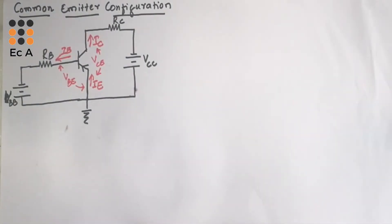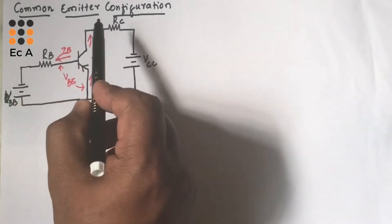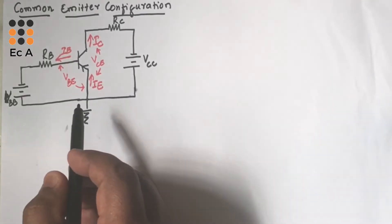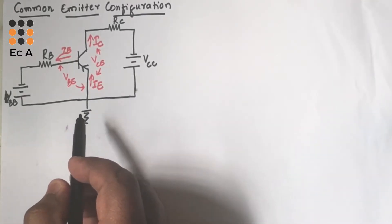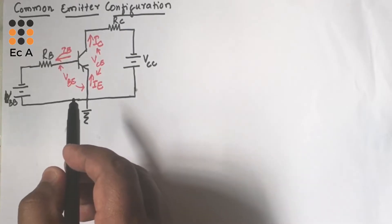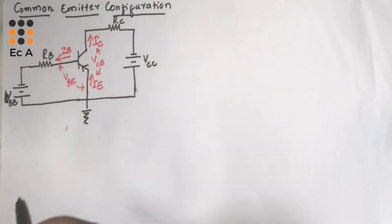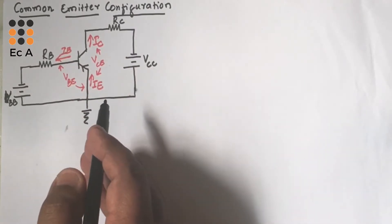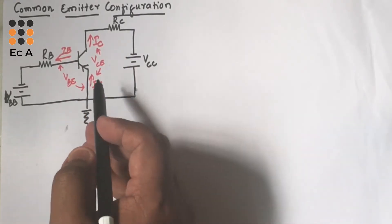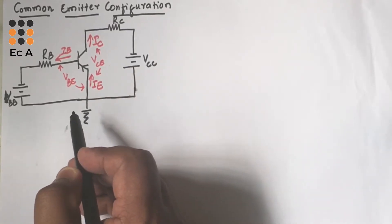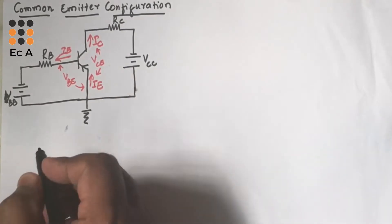Hello friends, welcome to EC Academy. In this lecture we will understand the common emitter configuration of a transistor. The figure shows a PNP transistor used in common emitter configuration. The emitter terminal is common between input and output, so the emitter terminal is connected to ground, and IB is the input current.